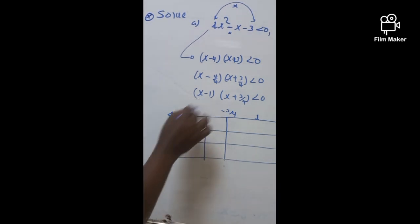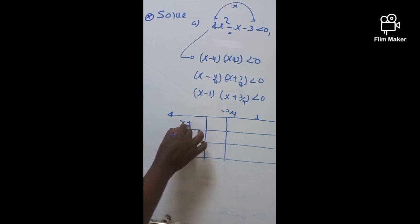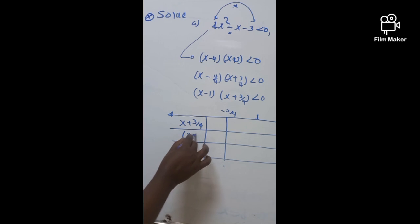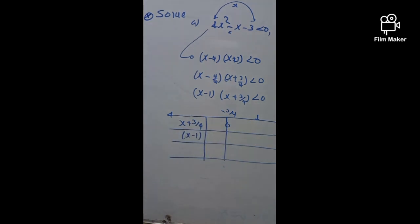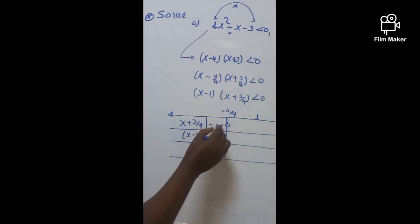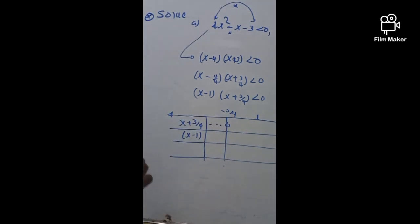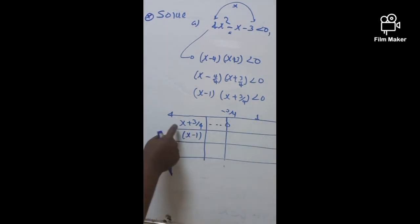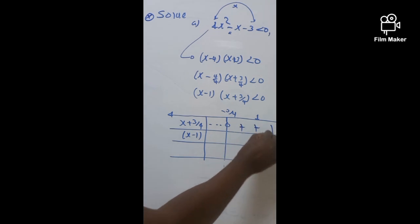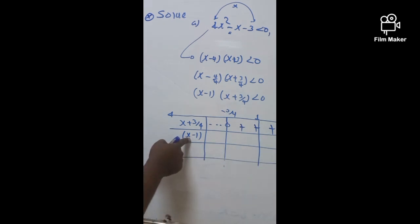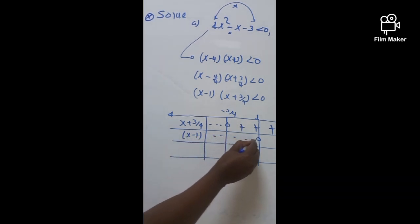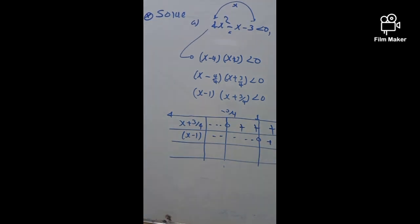Let's set up the sign chart with x, x plus 3/4, and x minus 1. At negative 3/4, x plus 3/4 is zero. On the left of negative 3/4, this is negative; on the right, it is positive. For x minus 1: it equals zero at x equals 1. On the left of 1, this is negative — for example, plugging in zero gives zero minus 1 which is negative. On the right of 1, it is positive.